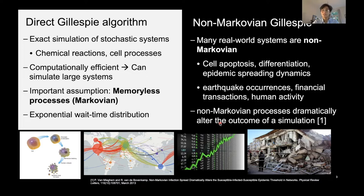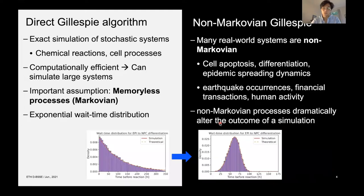On the other hand, many real-world processes are actually non-Markovian. For example, cell apoptosis, cell differentiation, disease spreading dynamics, earthquake occurrences, and in general human activities are hopefully non-random. And it's been empirically shown that non-Markovian processes dramatically alter the outcome of a simulation. So ideally, we want to go from an exponential distribution shown on the left here to something non-exponential on the right.